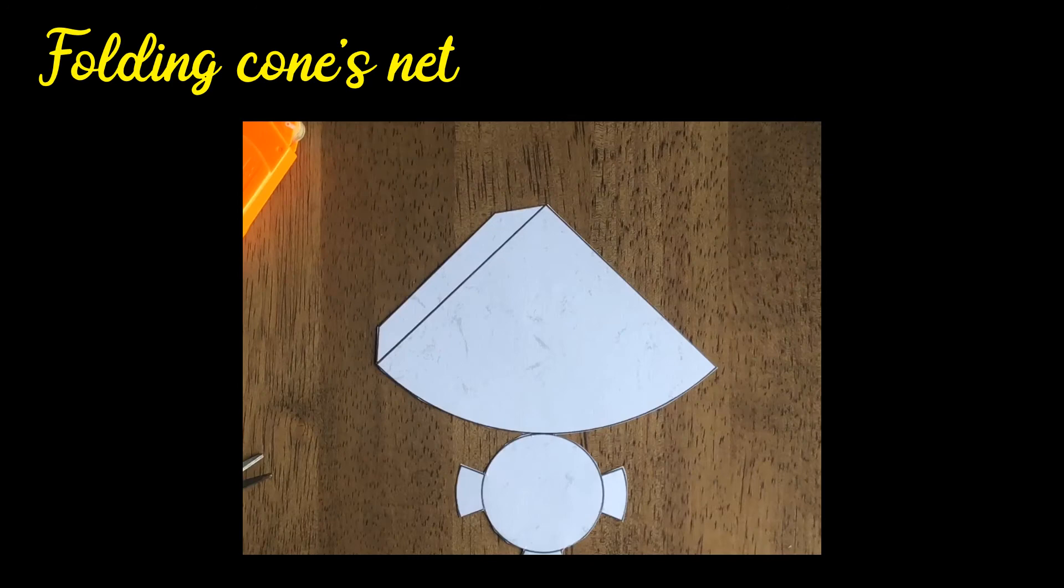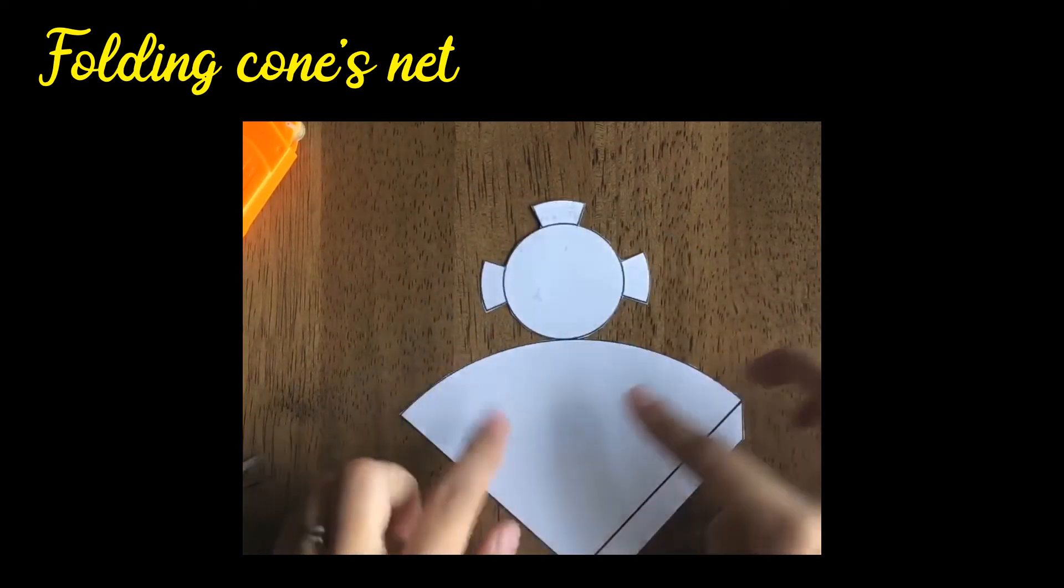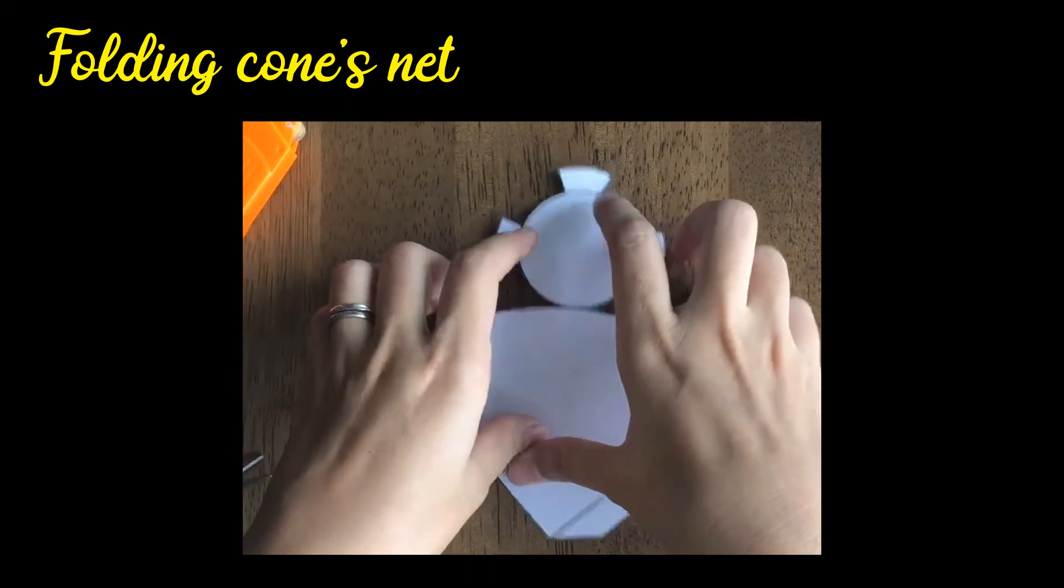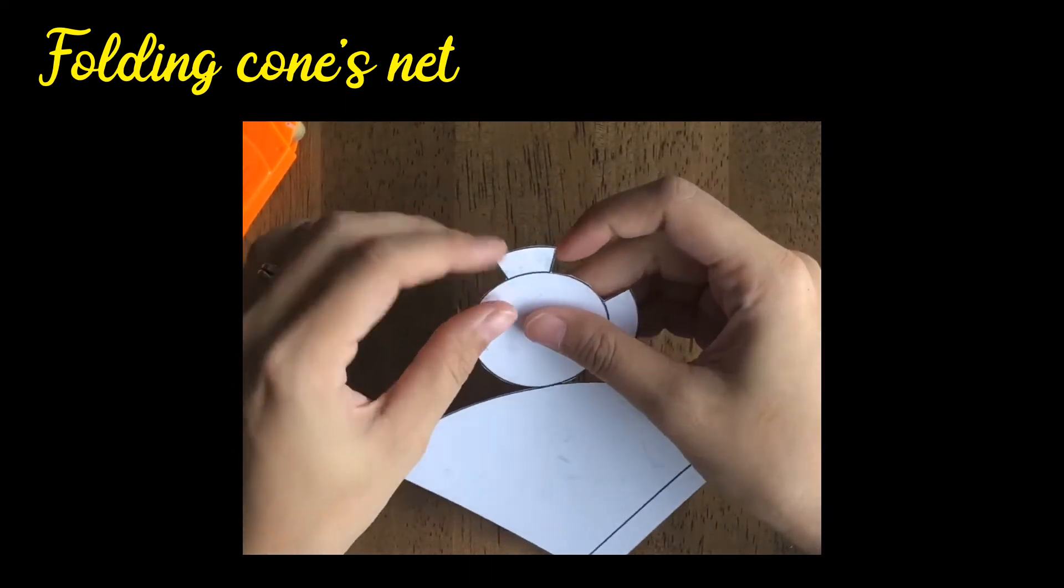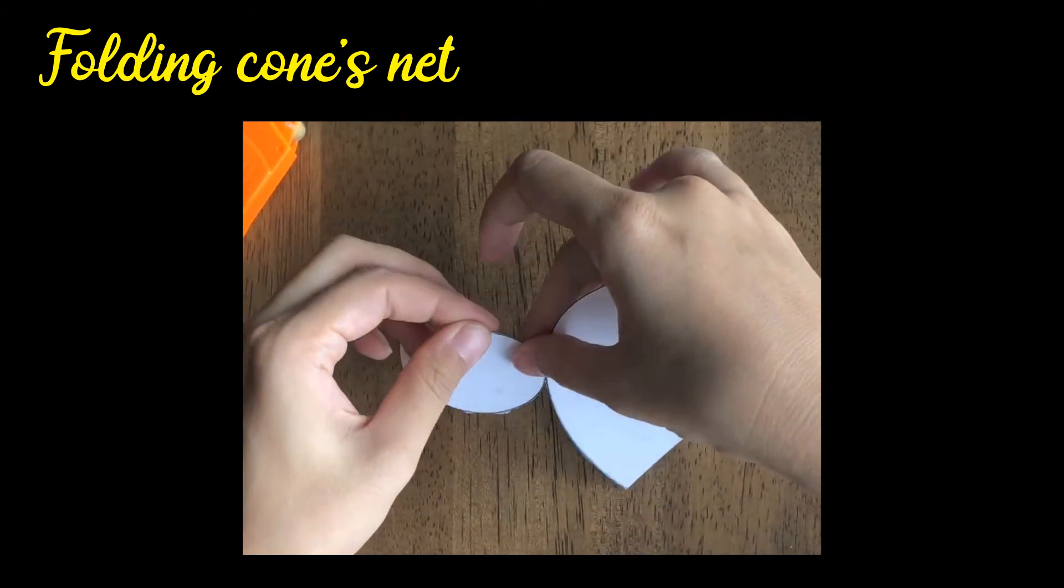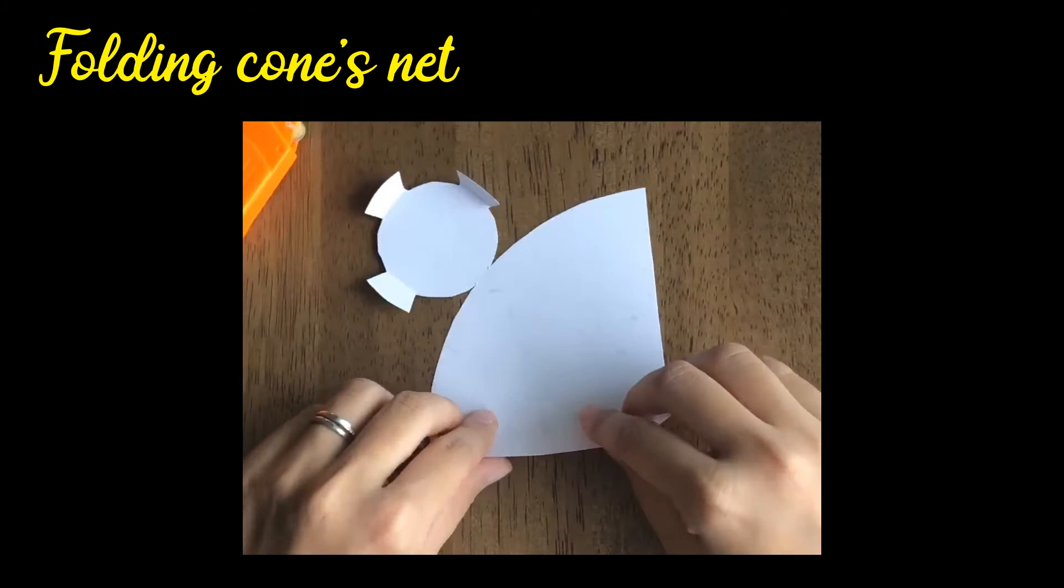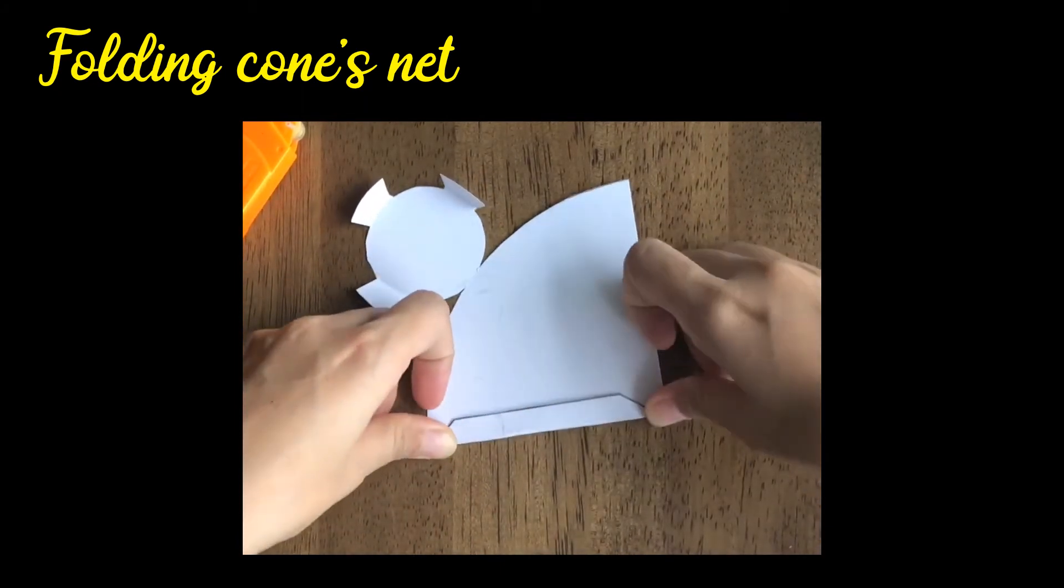Next one we have cone. A cone has a segment and a circle. Like this is the net. How do we fold a cone's net? Let me show you. This is the net. What you do is to fold the smaller parts in so later you can stick it properly. Fold along any black lines.